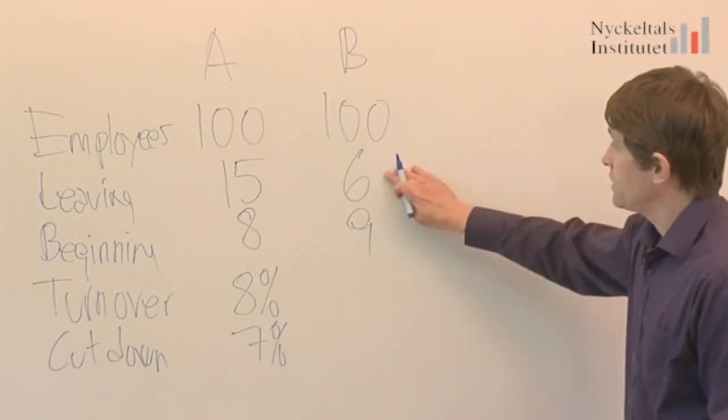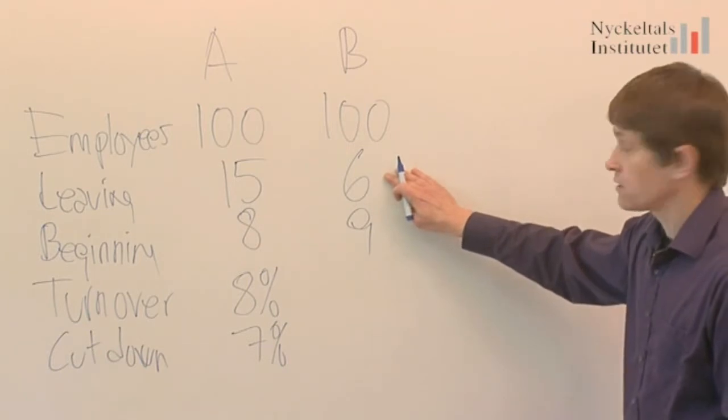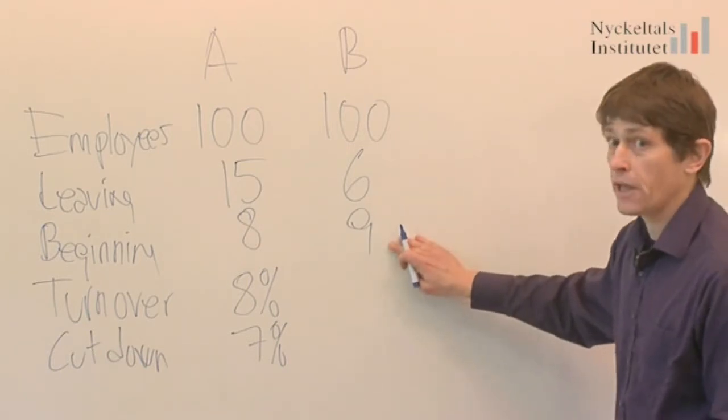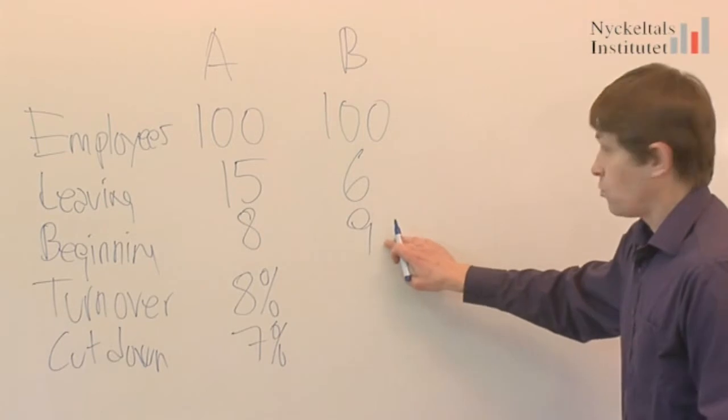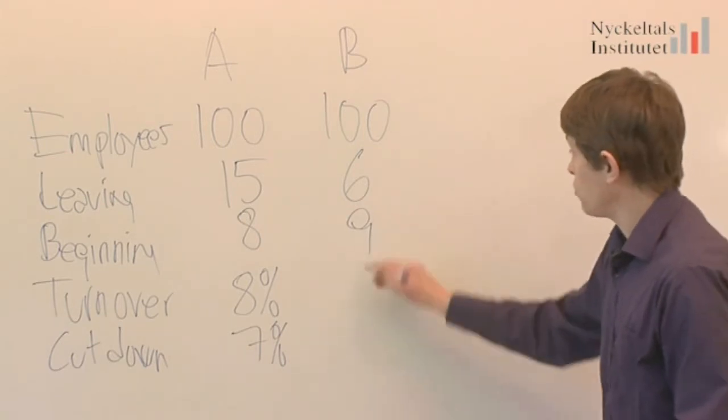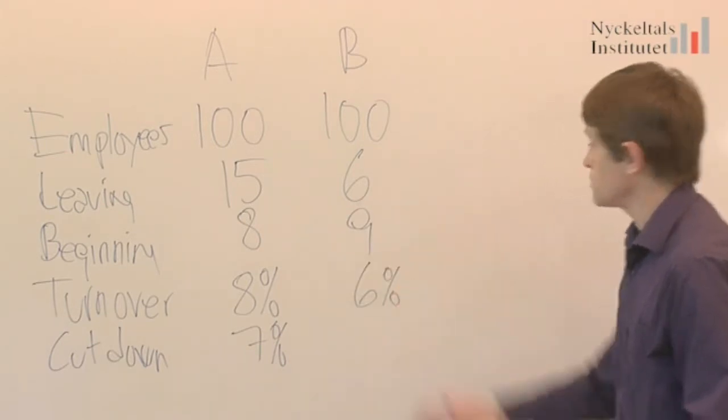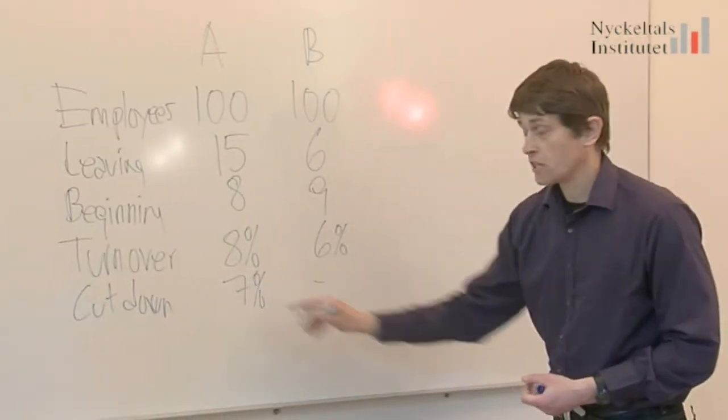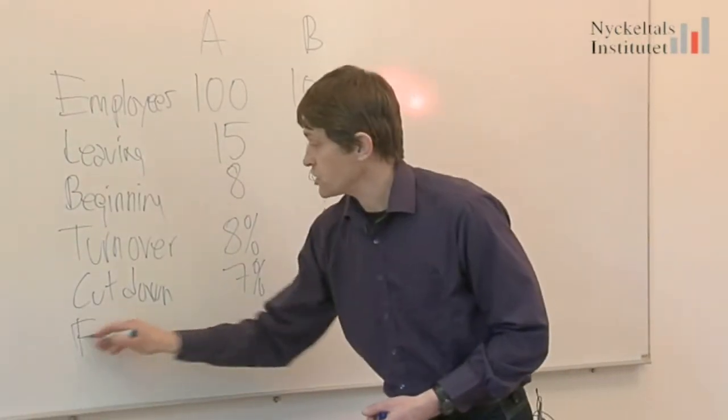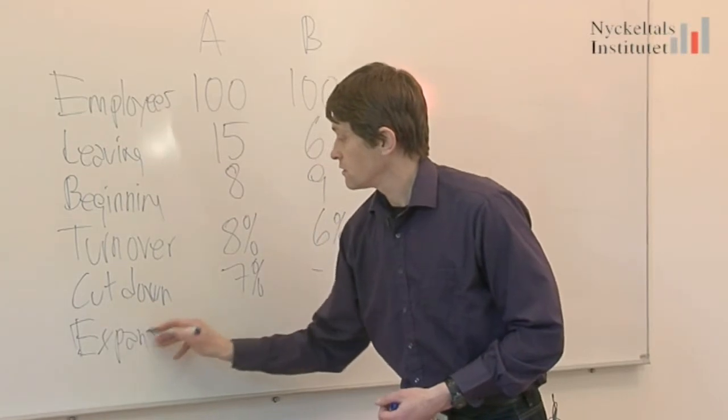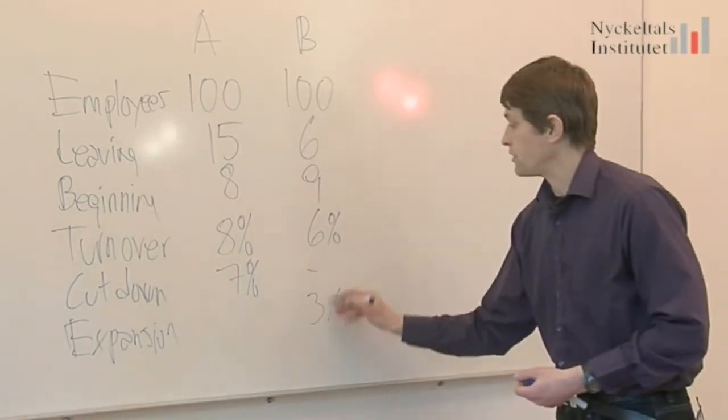And in B we have 6 employees leaving. All of those are replaced, but we have another 3 beginning. So we have a replacement of 6% and another 3, not cut downs, but expansion of 3%.